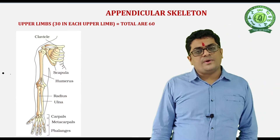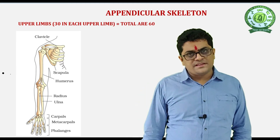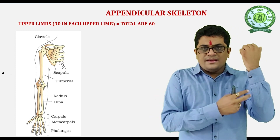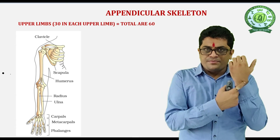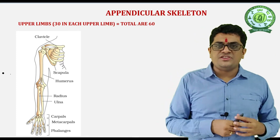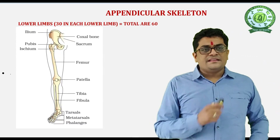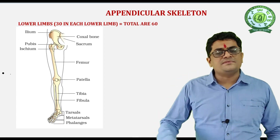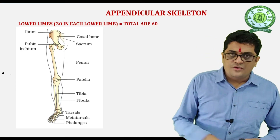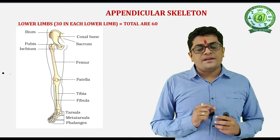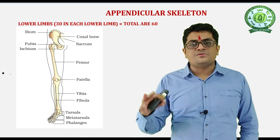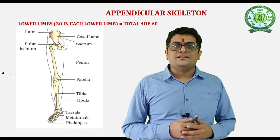The appendicular skeleton has a total of 126 bones: 60 bones of the upper limbs, 60 of the lower limbs, and 6 bones are the girdles. In the upper limbs, there are 1 humerus, 2 radio-ulna, 8 carpals, 5 metacarpals, and 14 phalanges — total 30 bones in each upper limb. The lower limbs have 1 femur (the longest bone of the body), 1 tibia-fibula, 7 tarsals, 5 metatarsals, 14 phalanges, and 1 patella (the knee cap) — total 30 bones per lower limb, giving 120 bones for both limbs.